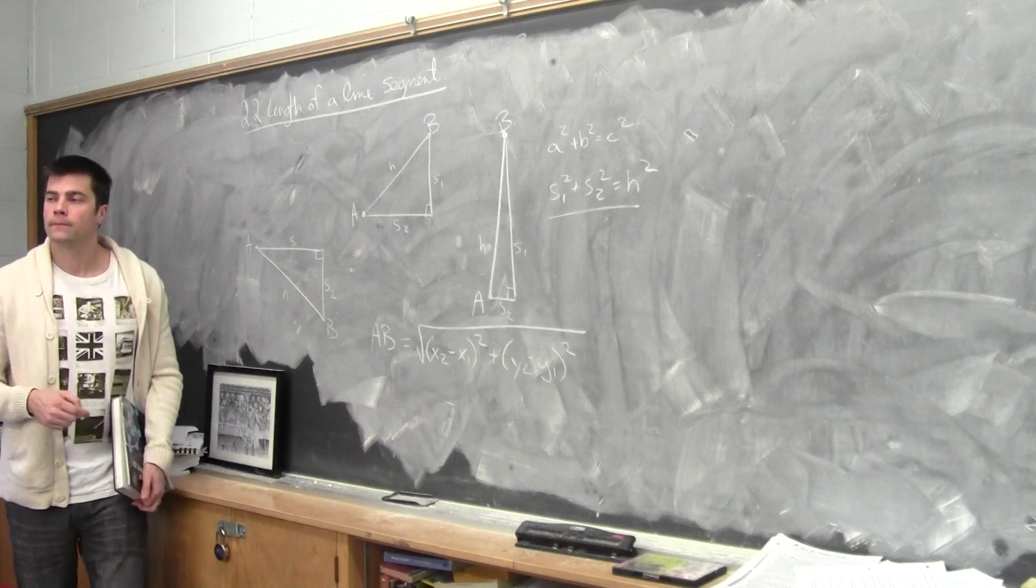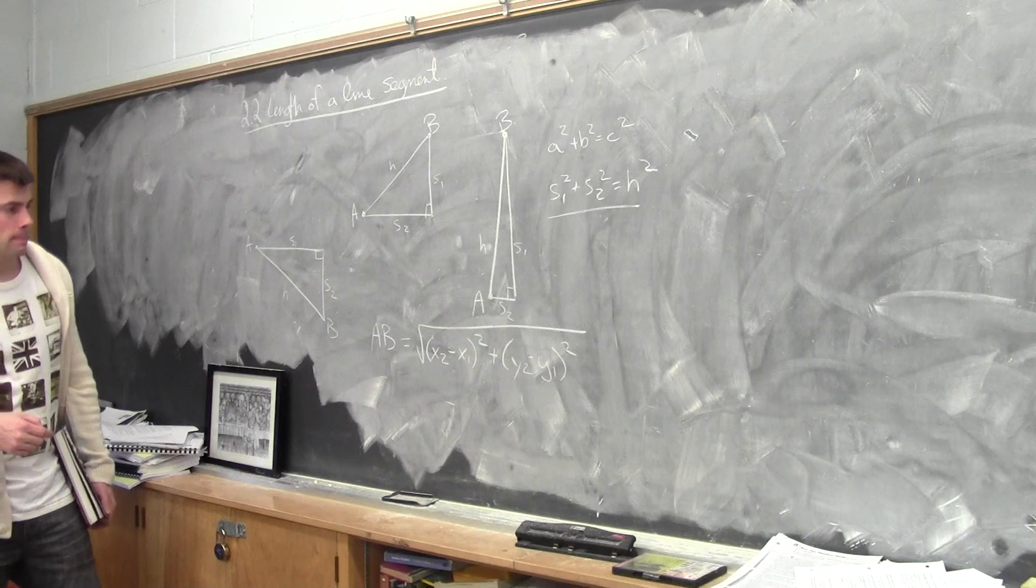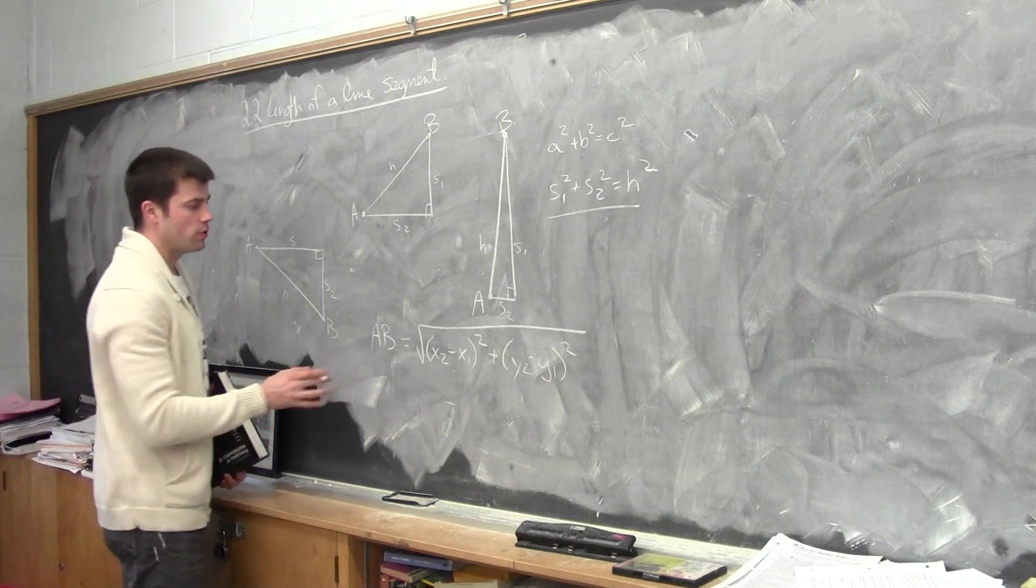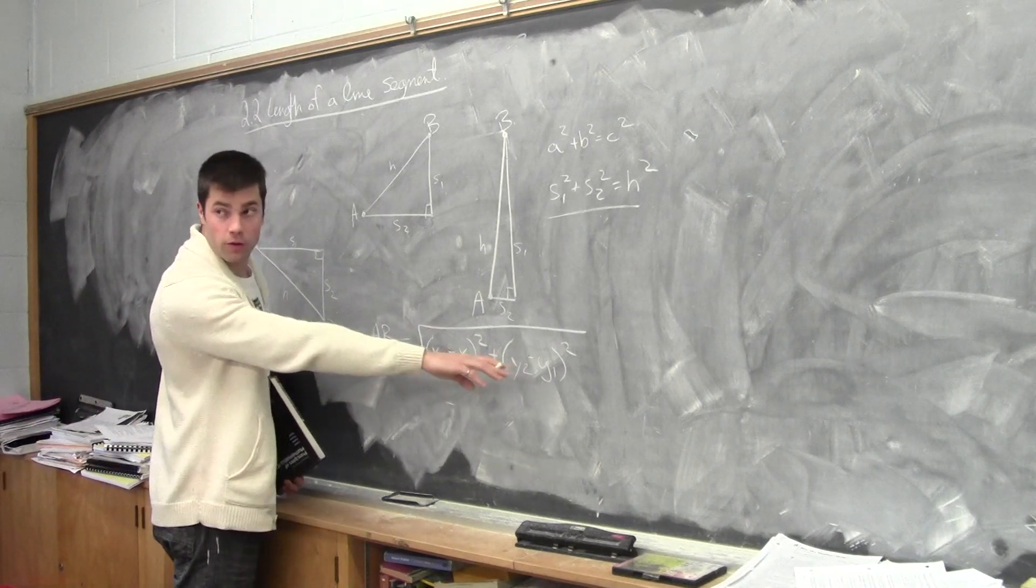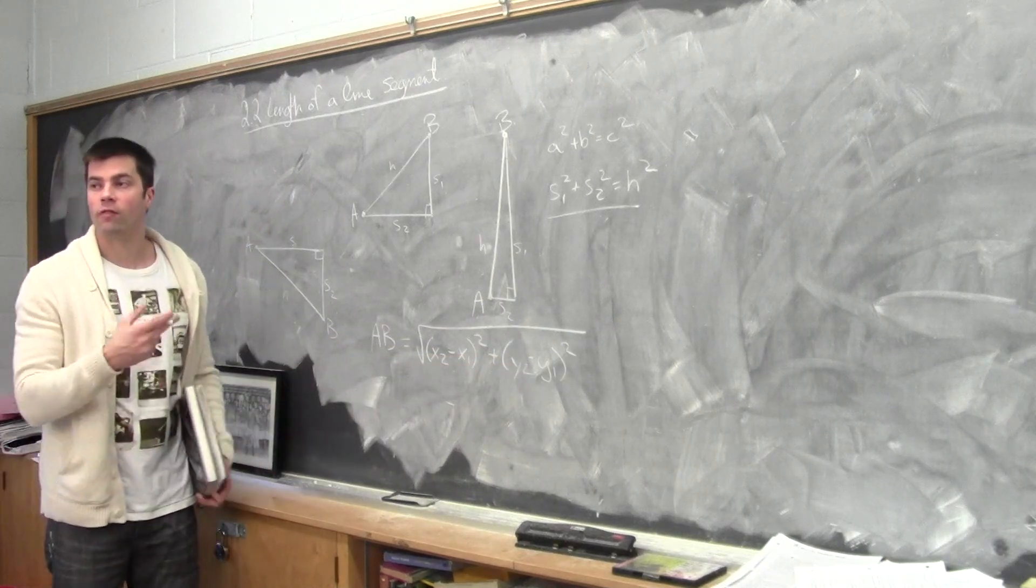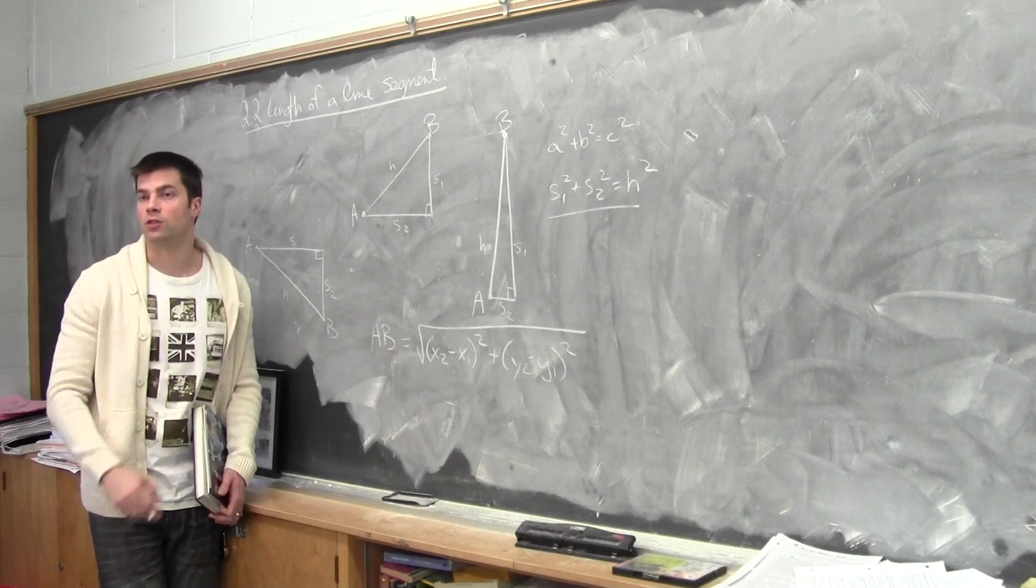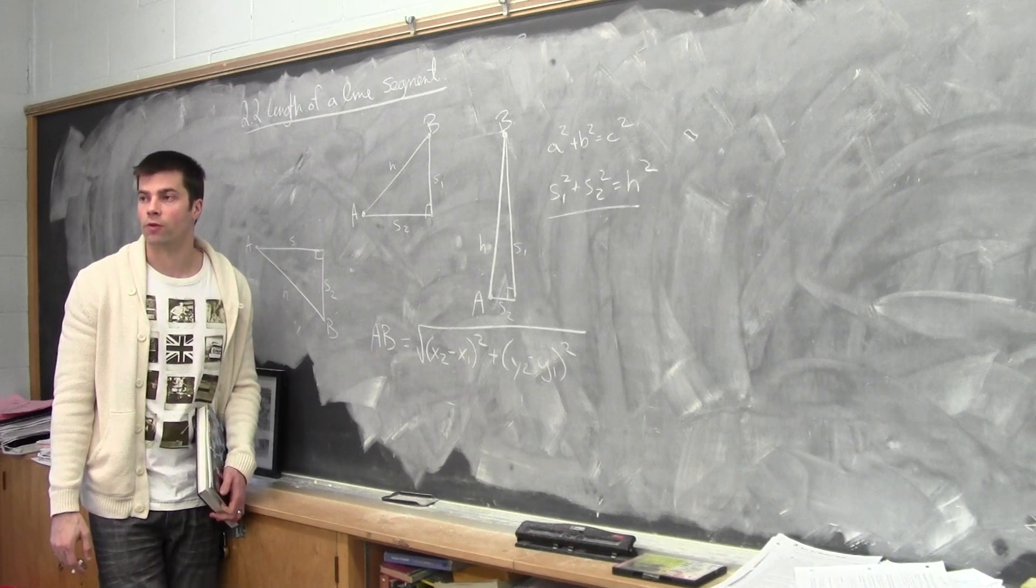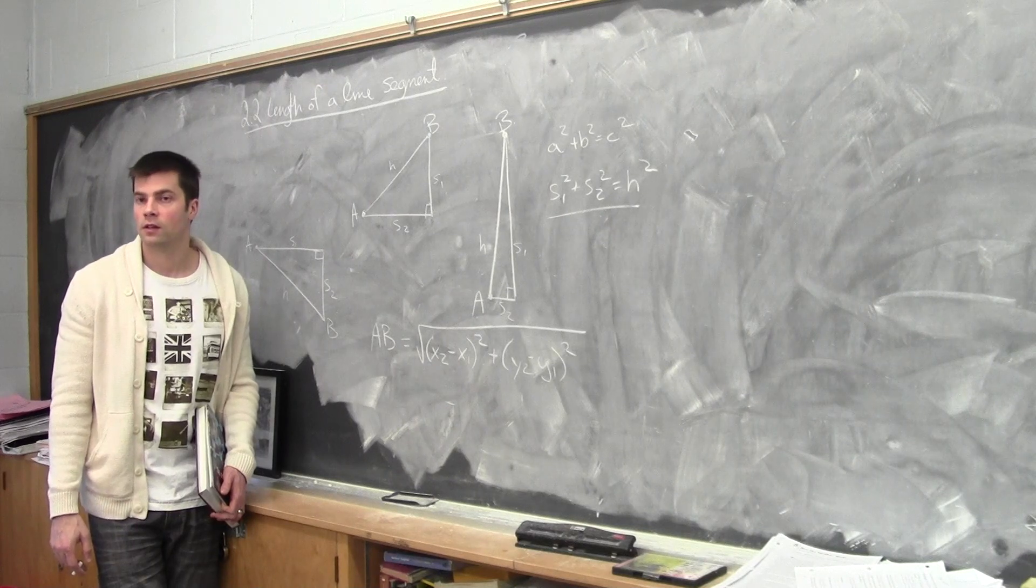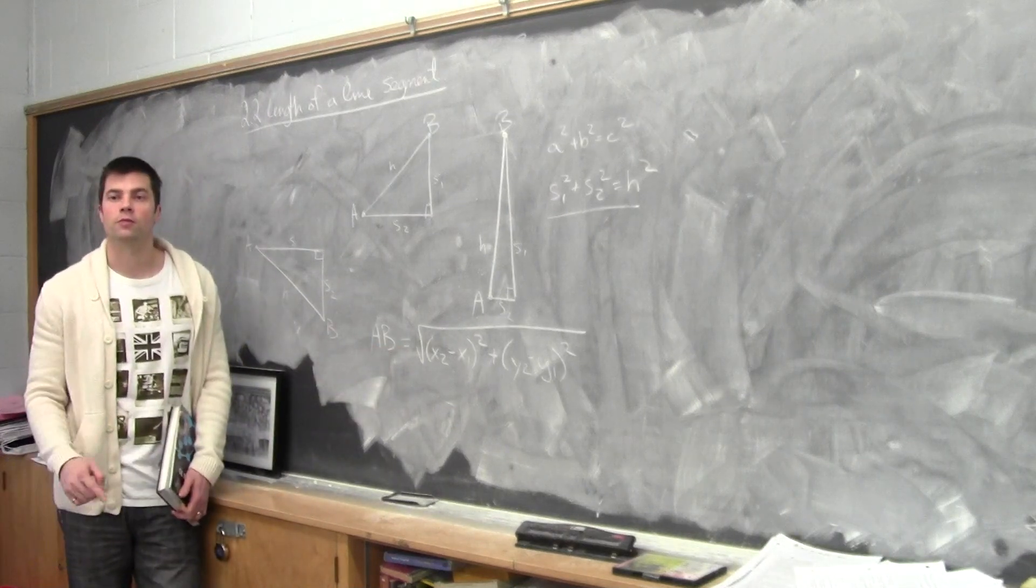When you get the square root, can you just simplify it or do you have to calculate it? When you get the square root of the value of the length, you would take the square root. If you can simplify it and keep it in whole numbers, that's fine as well. As long as you break it down to the simplest square root form.